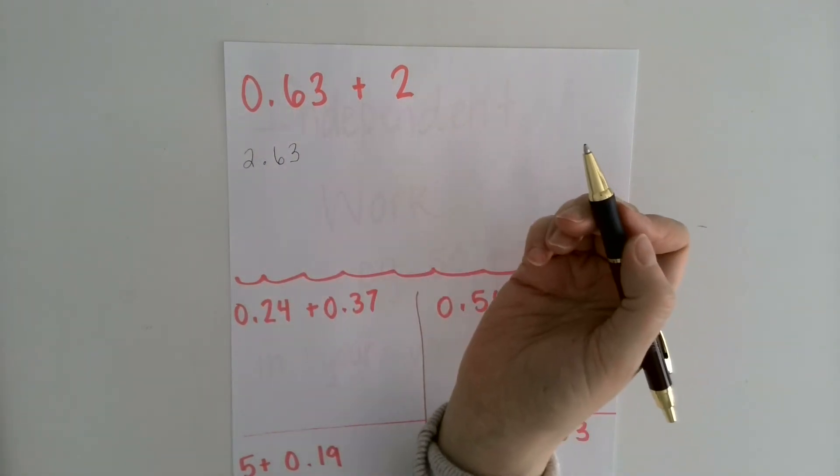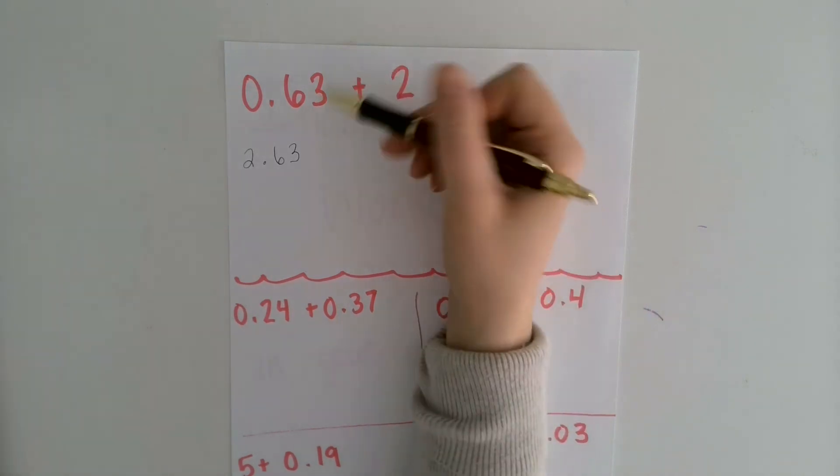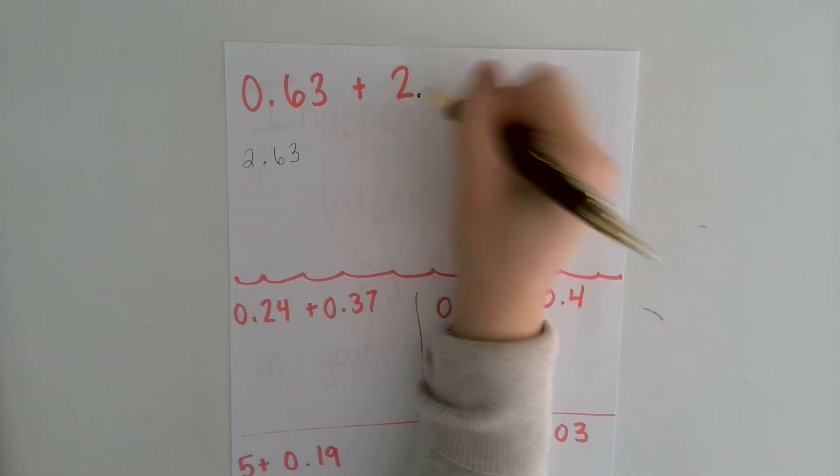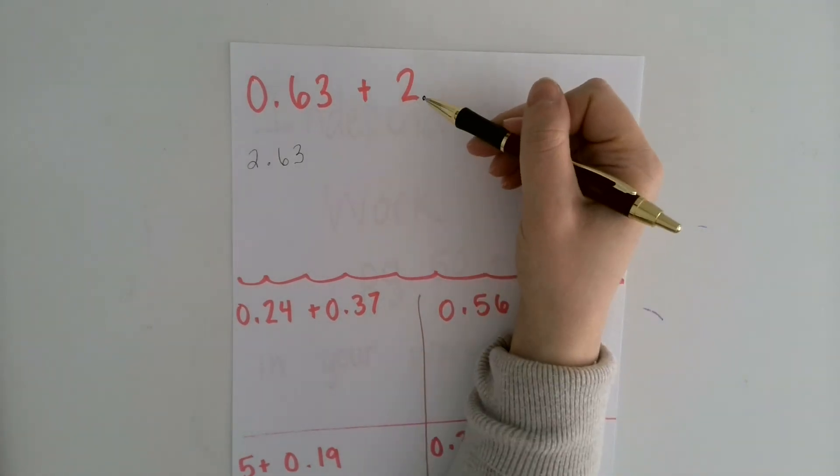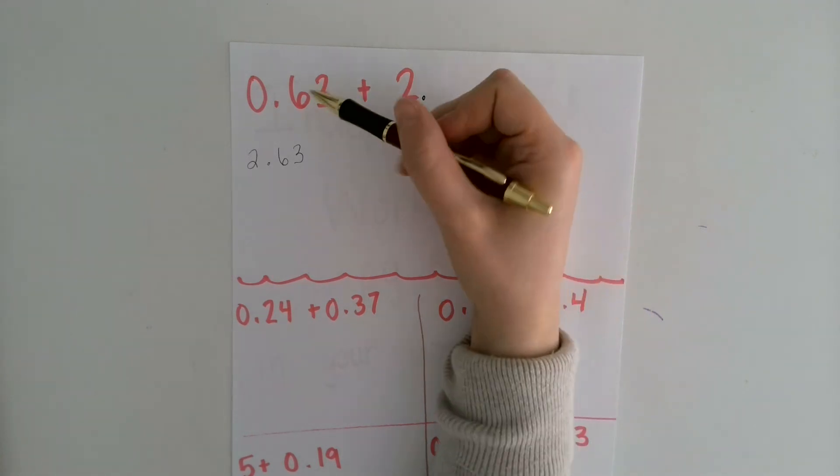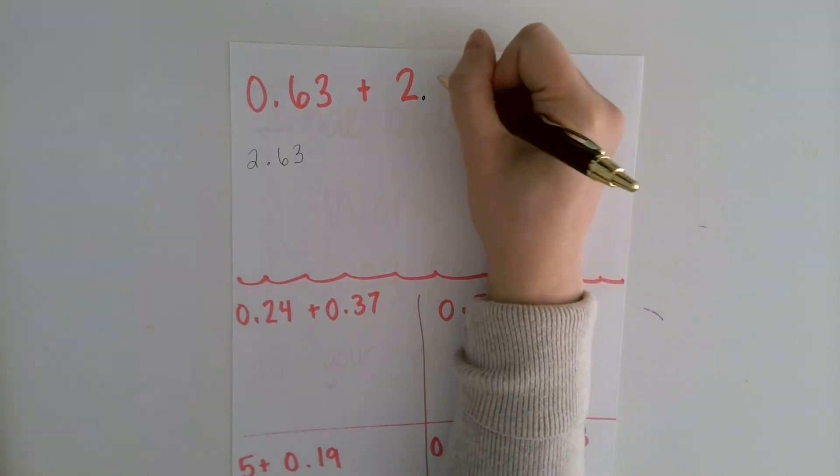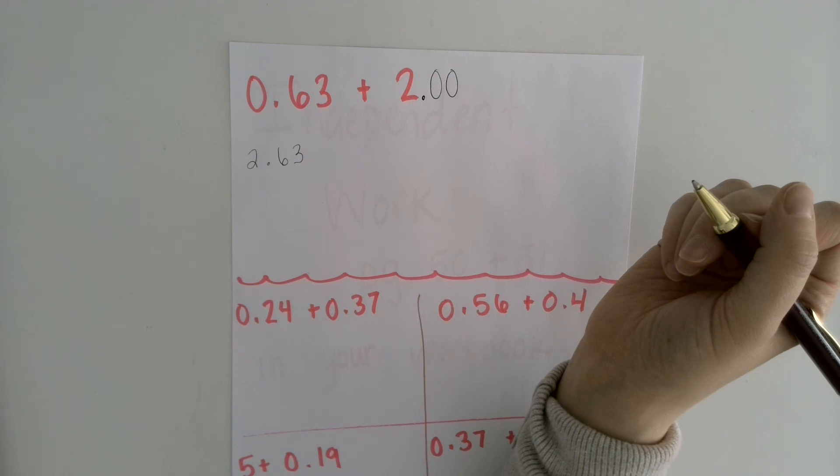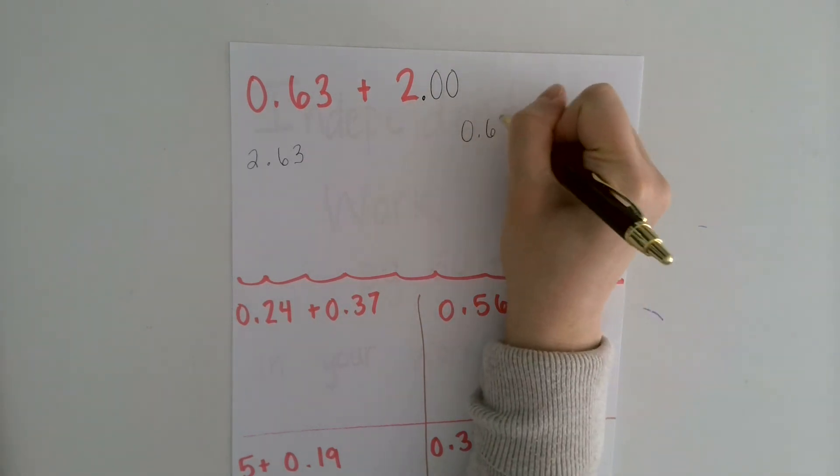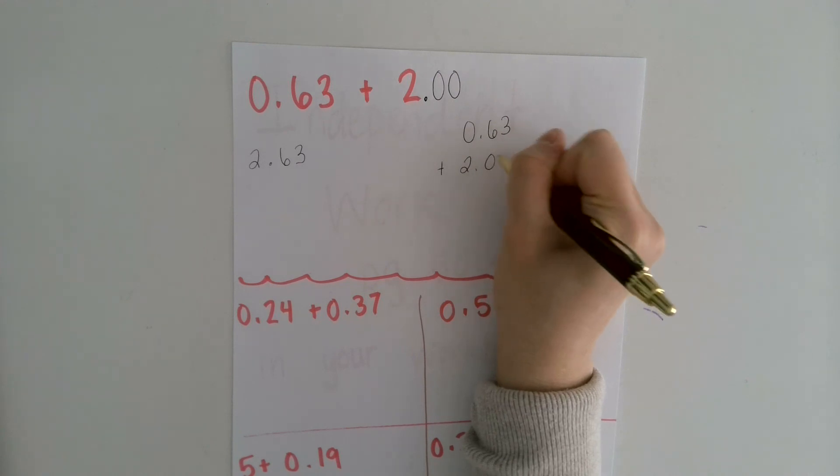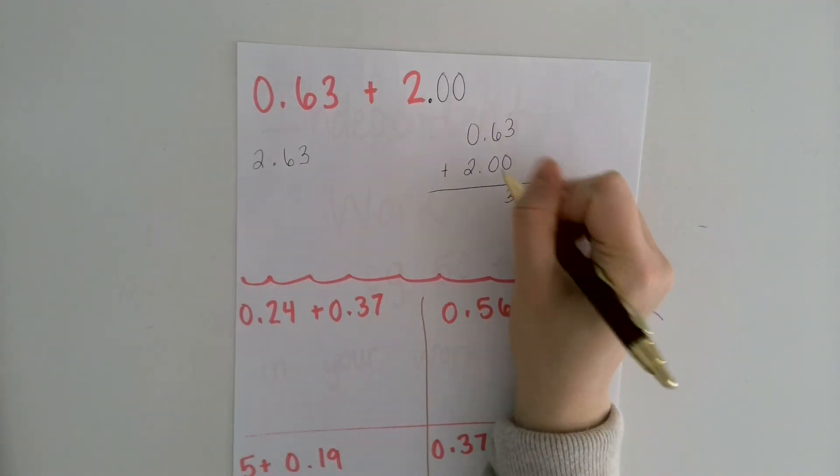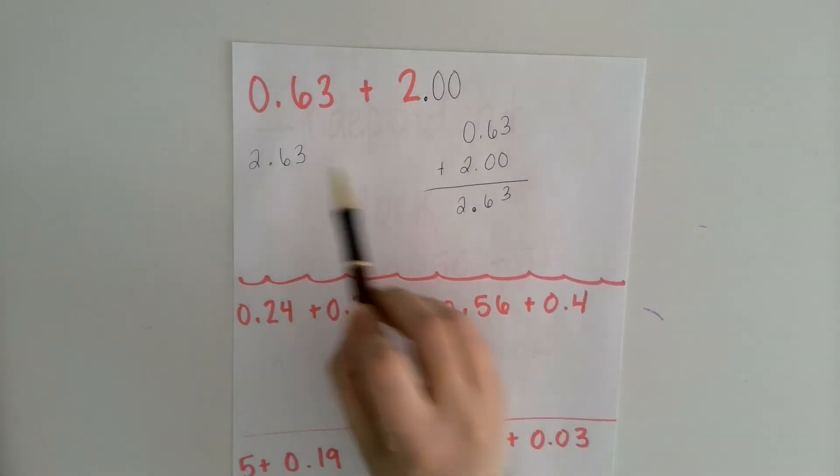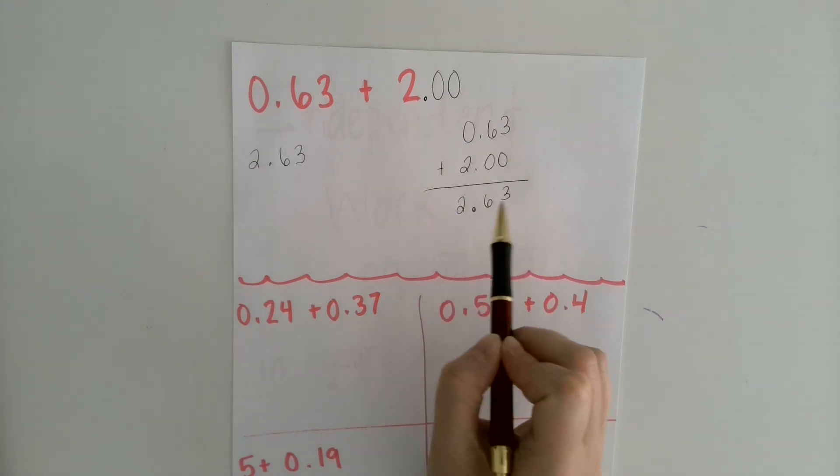If that isn't as easy for you and you want to add them and line them up, I don't have any decimal point here. But I know that in whole numbers, the decimal point comes after the number. So even though we don't write that, it's kind of there in secret when we need it. This number goes two places past the decimal point, which means I'm going to make this number have two places past the decimal point. Now I can line them up. 3 plus 0 is 3. 6 plus 0 is 6. 0 plus 2 is 2. Decimal point straight down. So whether you're doing it mentally or you want to line it up, you're going to get the same answer.